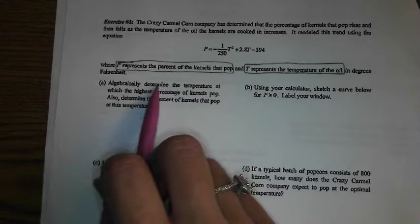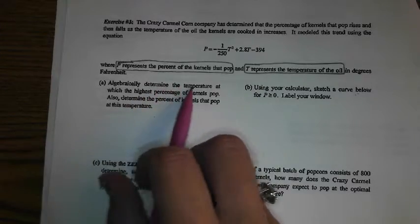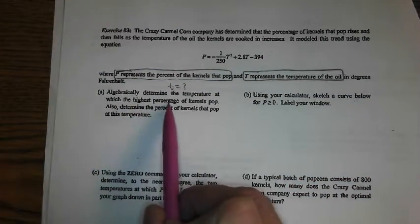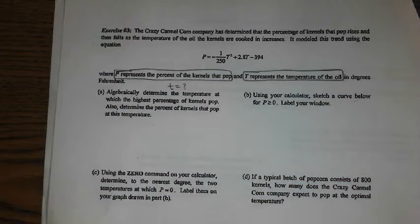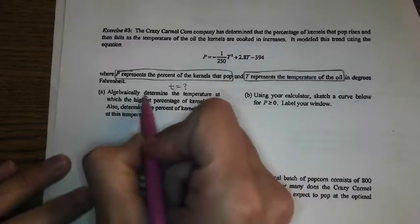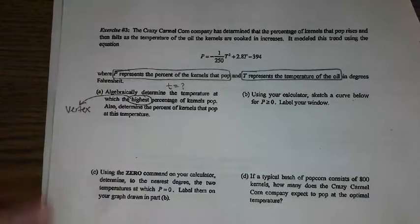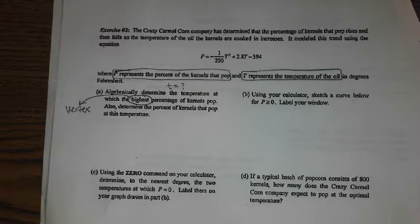Which variable are we going to solve for if they're saying determine the temperature? Okay, so we're looking for T at which the highest percentage of kernels pop. Now, highest and lowest are key words that mean vertex. We essentially want the vertex.